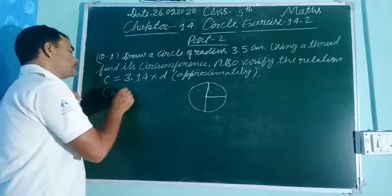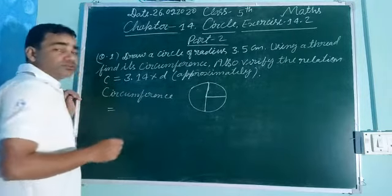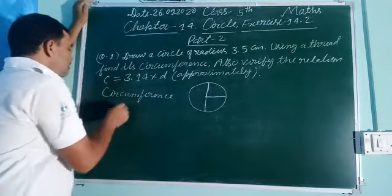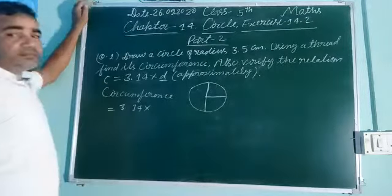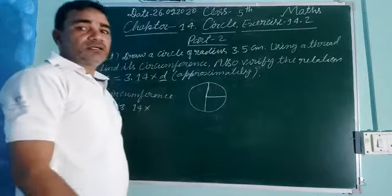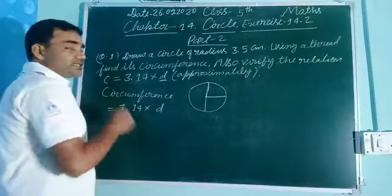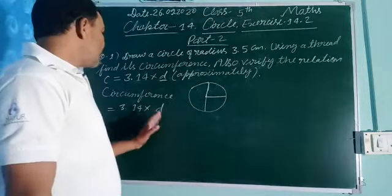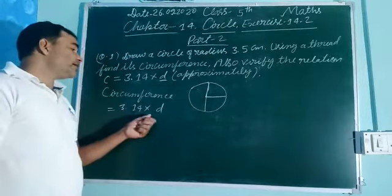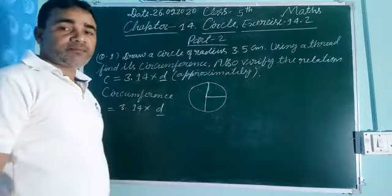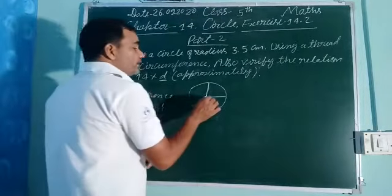C represents circumference, and the formula is: C = 3.14 multiplied by D. D का मतलब diameter होता है — इस circle का diameter होगा, उसका multiply करेंगे तो आपका circumference आ जाता है। किसी भी circle का circumference find करने के लिए आपको 3.14 में D का multiply करना है।